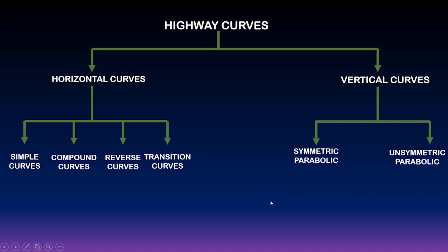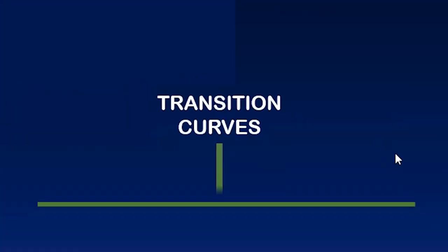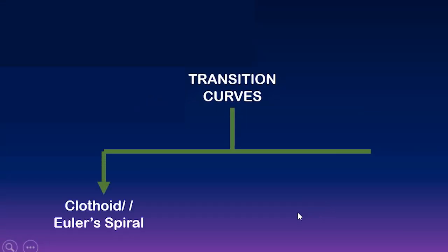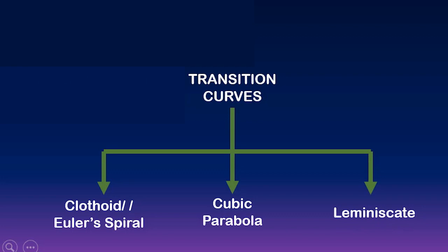In this video, I'm going to discuss transition curves. For transition curves, we have the clothoid or Euler's spiral, cubic parabola, and lemniscate. But the type of transition curve I'm going to discuss here is the clothoid or Euler's spiral.